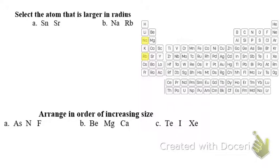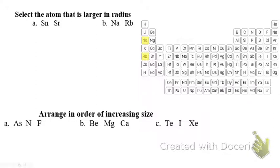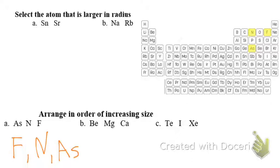Sometimes we're going to ask you to order elements in increasing size. Remember: increasing means starting from the smallest and getting bigger — small to big. My smallest one is going to be the one farthest from francium. In this case, the order from smallest to largest is fluorine, then nitrogen, then arsenic — each one getting a little bit closer to francium, either moving left to right on the same row or going down a few rows.